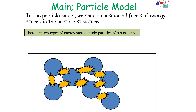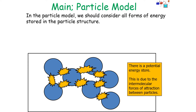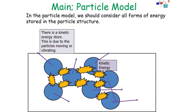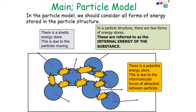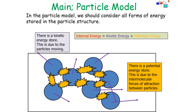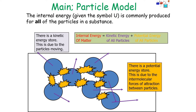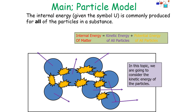In the particle model, we should always consider all forms of energy stored in a particle structure. There are two types of energy stored inside the particles of a substance: the potential energy store, which is the intermolecular forces of attraction between the particles, and the kinetic energy store, which is due to the particles moving or vibrating. In the particle structure, these two forms of energy are referred to as the internal energy of the substance. The internal energy is equal to the kinetic energy plus the potential energy of all of the particles in a substance.